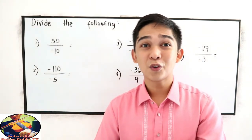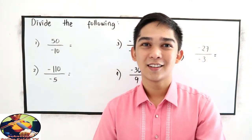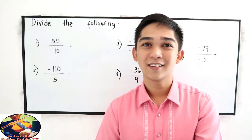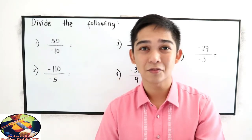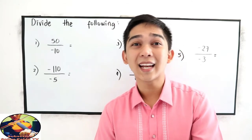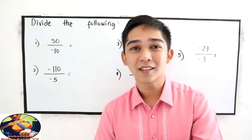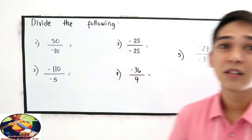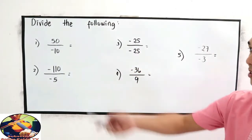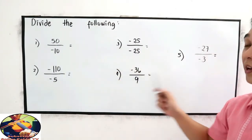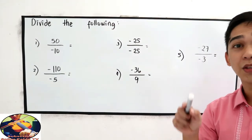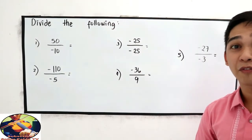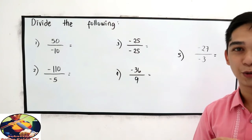If we divide like signs, the quotient is positive. If we divide unlike signs, the quotient is negative. We have exercises numbers 1, 2, 3, 4, and 5. If you want to try, you can pause the video, then after answering you can resume.